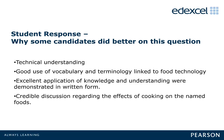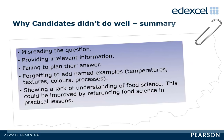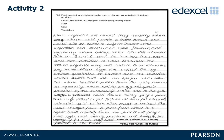Technical understanding, good use of vocabulary and terminology linked to food technology, and excellent application of knowledge and understanding were demonstrated in written form. Credible discussion regarding the effects of cooking on the named foods was rewarded. This slide summarises, using previous examples, why candidates didn't do well. Please read the question carefully and have a go at marking the candidate's response — you may want to pause the video at this point to carry out the activity.